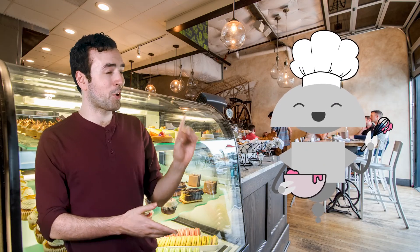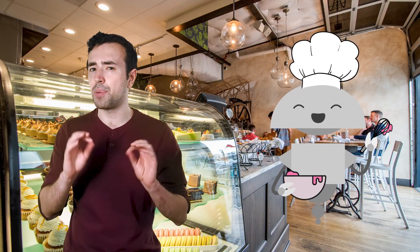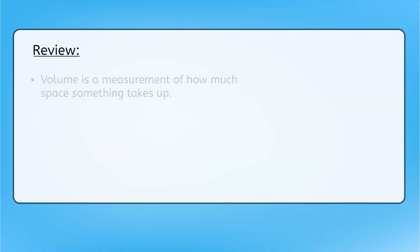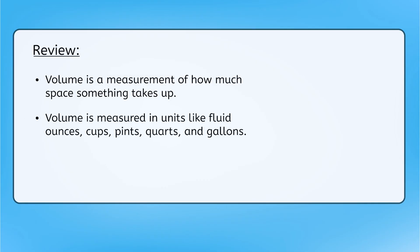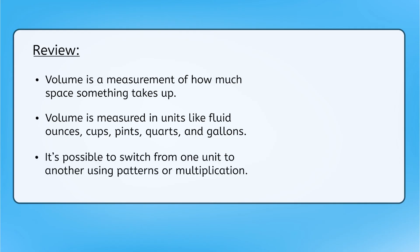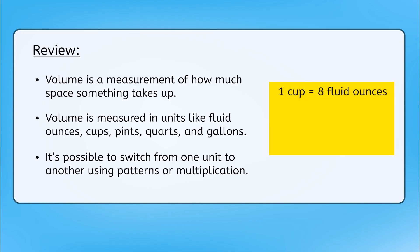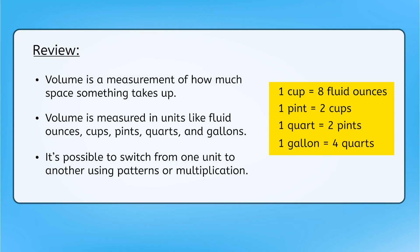All right, Mia, these ingredients are ready to mix. Nice work, mathematicians. So what have we learned today, besides the fact that perfect treats start with precise measurements? Now you know that volume is a measurement of how much space something takes up. Volume is measured in units like fluid ounces, cups, pints, quarts, and gallons. You also know that it's possible to switch from one unit to another using patterns or multiplication — because one cup equals eight fluid ounces, one pint equals two cups, one quart equals two pints, and one gallon equals four quarts.